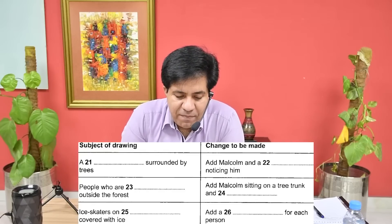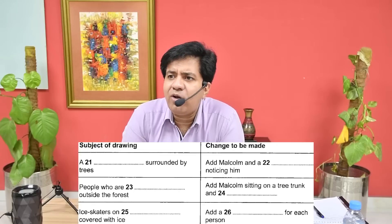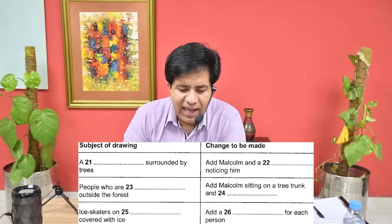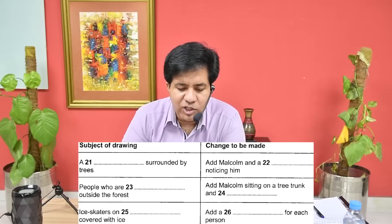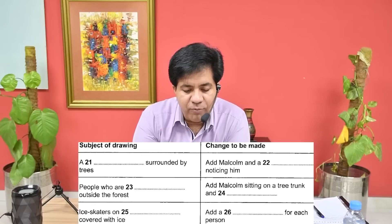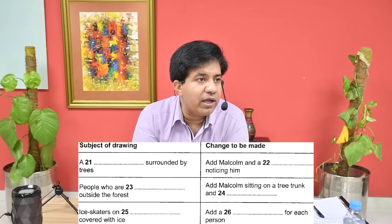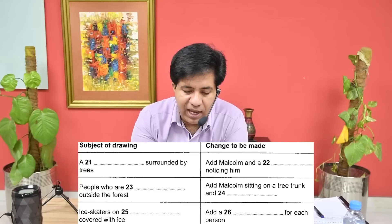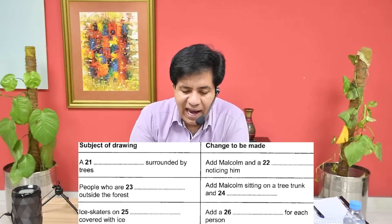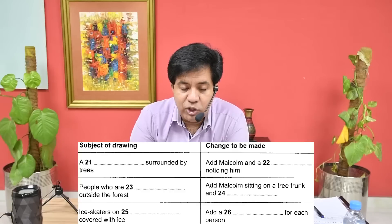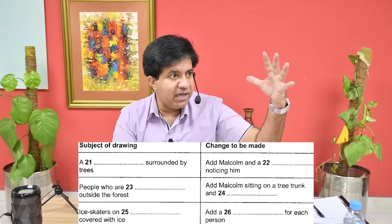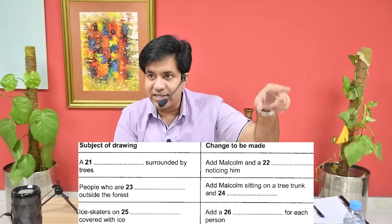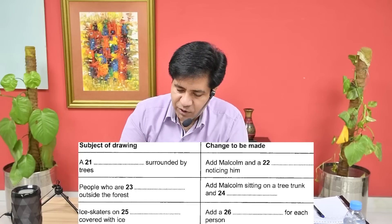Change to be made: add Malcolm and a dash noticing him. If you don't know Malcolm, it's okay — they will tell us in the audio what Malcolm is. From 'noticing him' we understand Malcolm is a boy or a man. So Malcolm is a name of a boy. 'Add Malcolm and a dash noticing him' — noticing him means looking at him. Now, what is it that they need to add which is noticing him?